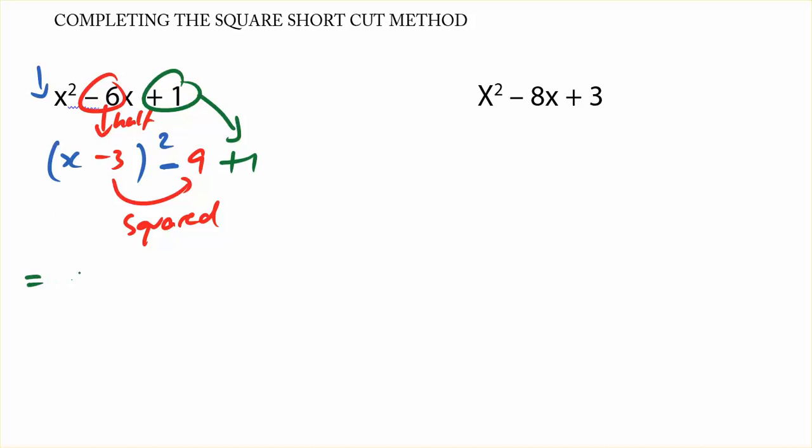So we can just simplify this whole thing, this whole equation, into negative 8. And I can read the turning point as 3 negative 8.